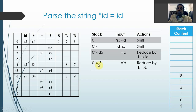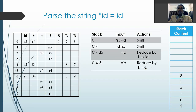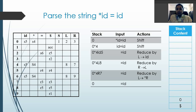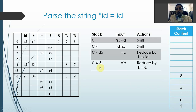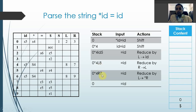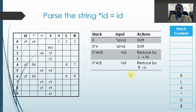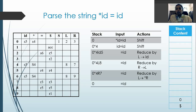Now it is state 8 on '='. State 8 on '=' means reduce by the 5th production, which is R → L. We pop L and its associated state, replacing L with R. Then state 4 on R gives us goto state 7. So we push R and state 7 onto the stack.